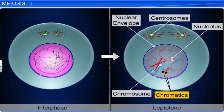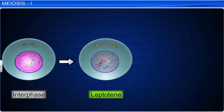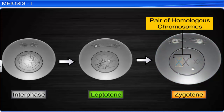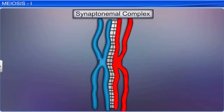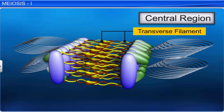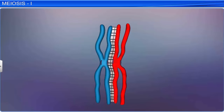In the next stage, the zygotene stage, homologous chromosomes — one from the paternal set and one from the maternal set — get attracted to each other and form pairs. This pairing is called synapsis. During this process, a complex structure known as a synaptonemal complex is formed. This complex structure consists of a pair of synapsed homologous chromosomes, called a tetrad or a bivalent.